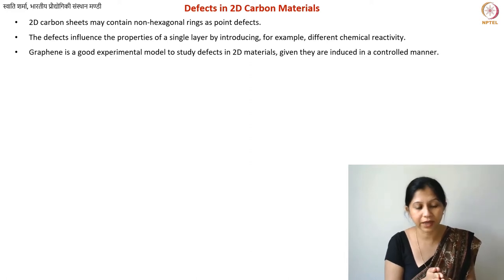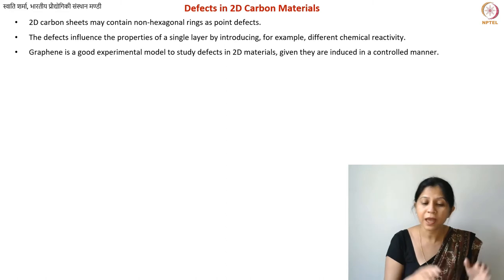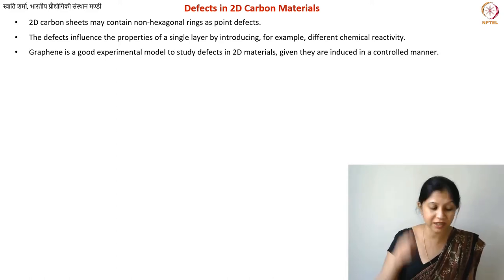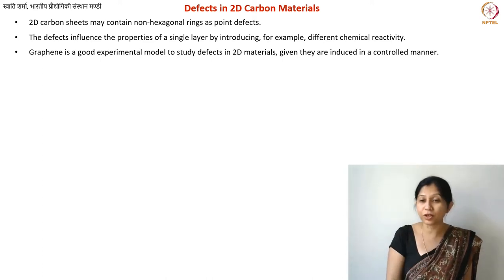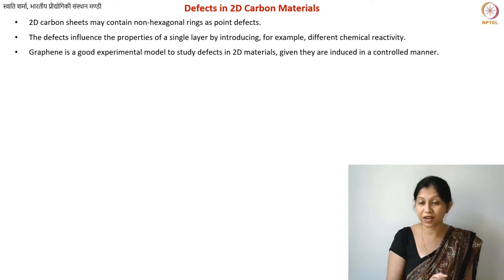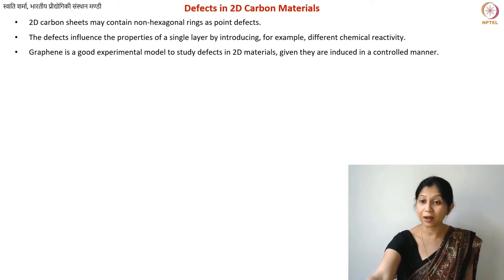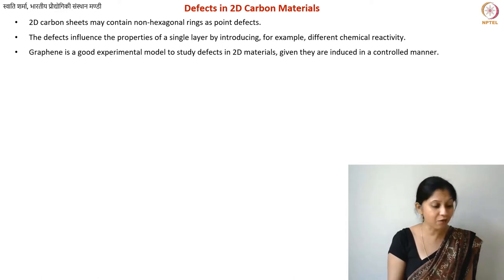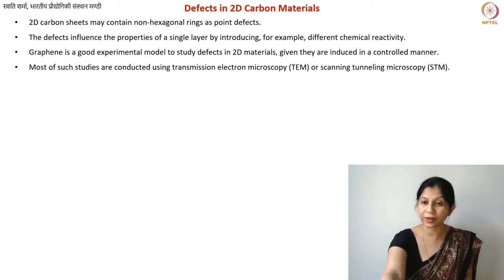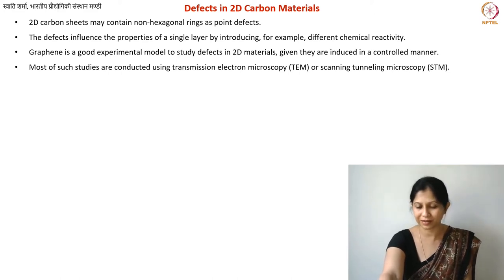Whether or not the defect-containing structure should be called graphene, we can understand that graphene is a good experimental model to understand these defects. The stability of defects and what new chemical properties they introduce can be understood theoretically as well as experimentally. If you can get single-layer graphene structures, for example by removing them from HOPG, that is a good experimental model to understand what kind of defects can exist in 2D materials. We now know that not only are 2D materials stable, they can also contain defects and still be stable.